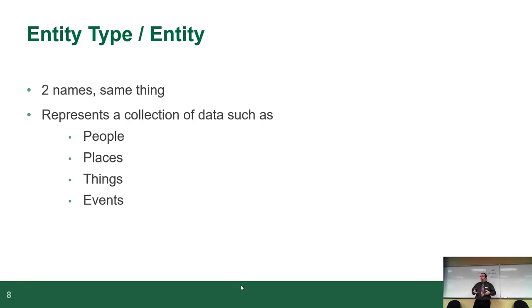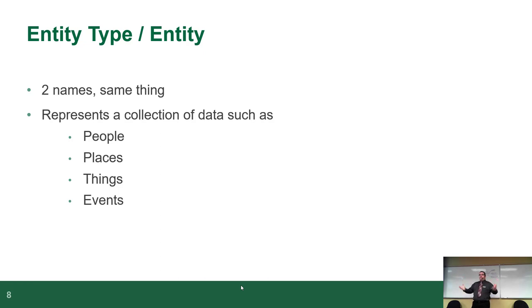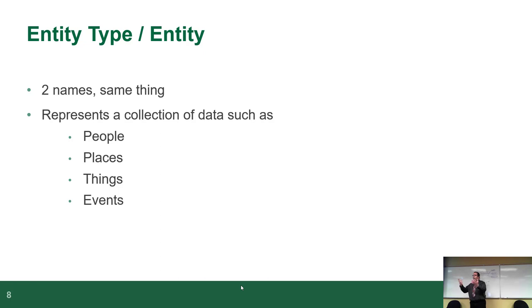An entity represents a collection of data — basically a thing. It could be people, places, an event, or processes, like an order process. Somebody picks up the phone, places an order — there's a process there. You have to model how that data will get stored. That ends up being an order, which gets shipped, which becomes a shipment — they become things. If I use the term 'student,' that's an entity type. Students all have similar attributes: names, dates of birth, genders, addresses, phone numbers, email addresses — those are all attributes that make up a type of entity.